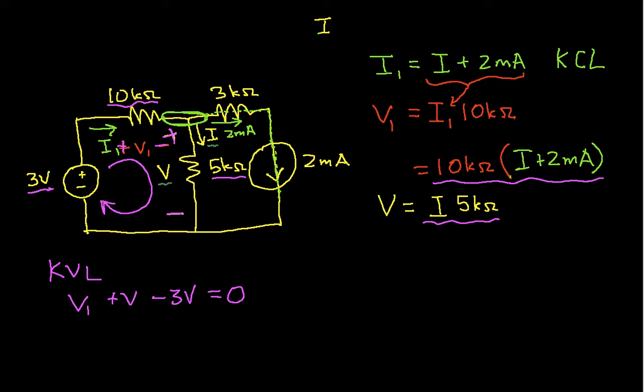So, let's see, V1 is going to be this 10k ohms times I plus 2 milliamps. Now we have to add V, which is I times 5k ohms, and we'll say that this is equal to 3 volts. Okay? So, that's our equation. It involves one unknown, which is I, and we can solve it then.